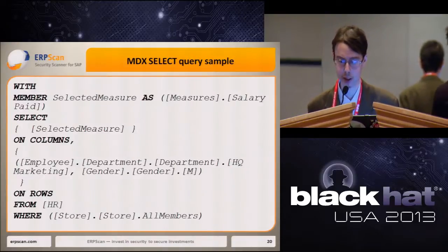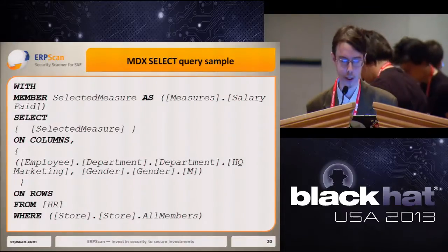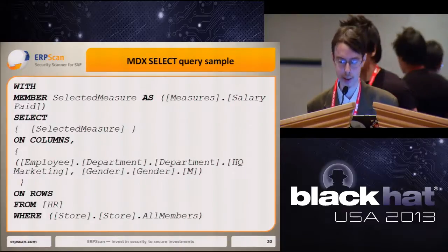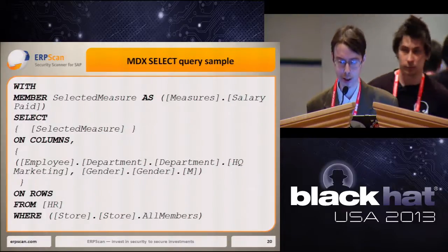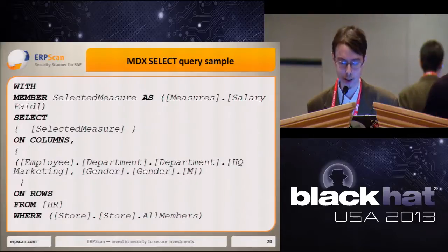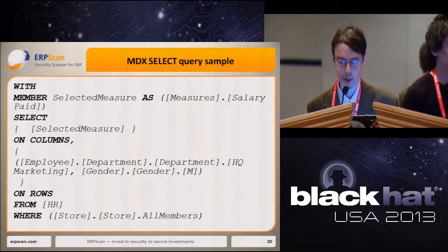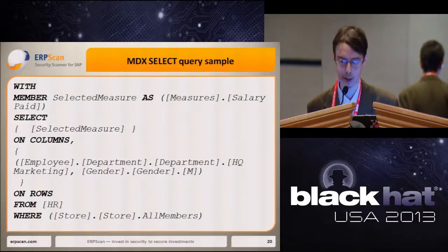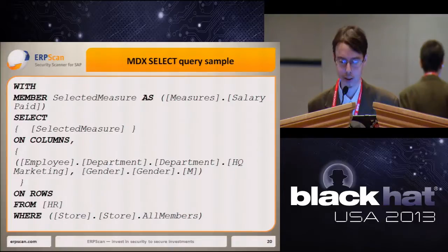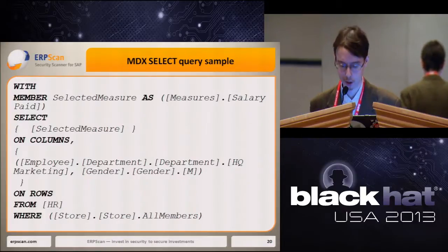You can see a sample MDX query on this slide. This query extracts information about the paid salary — described in the first dimension on columns — against male employees from the marketing department — described by the second dimension on rows. A new measure was defined in the WITH section of the query. In practice, measures can be more complex and even include subqueries. The data is acquired from the cube called HR, and the WHERE filter selects all members of the store.